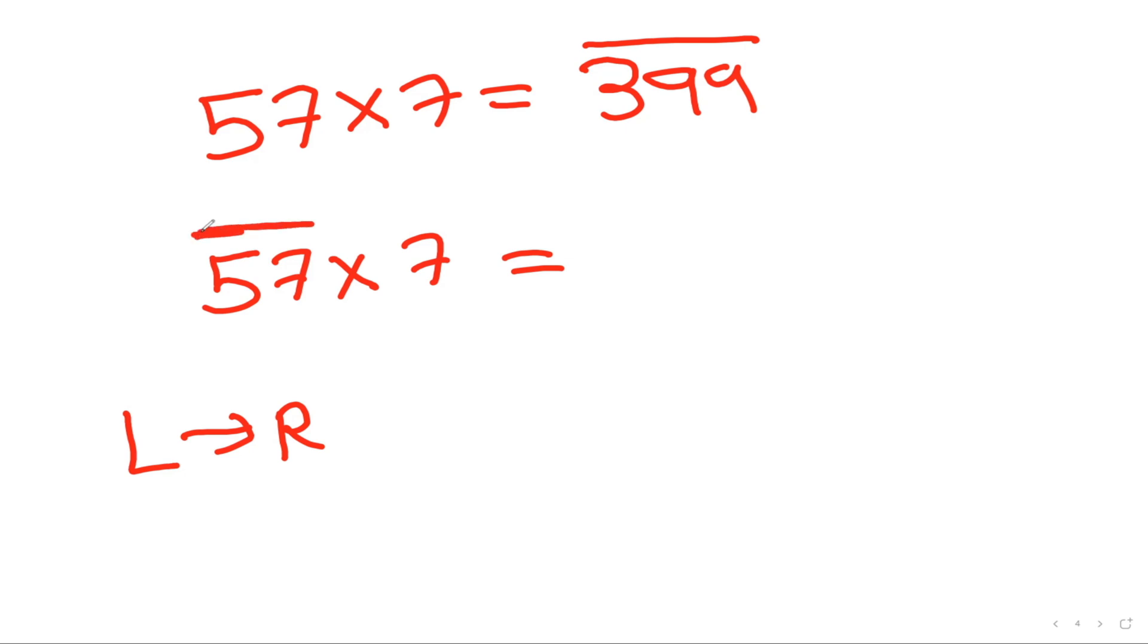5 is nothing else but 50, so 50 times 7 is 350, and then 7 times 7 is going to be 49, and then I can just plus them which is going to be 399. Is it not amazing?